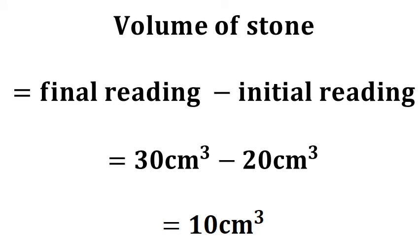Once we have both readings, all we have to do is subtract them. Volume of stone = final reading − initial reading. In this case: 30 − 20 = 10 cm³. So the volume of the stone is 10 cm³. Here we note that the volume of the object equals the volume of water which is displaced — which is shifted.